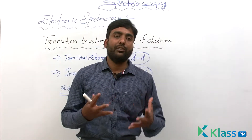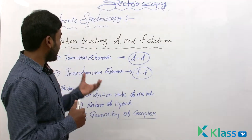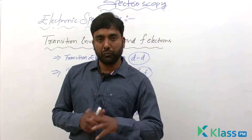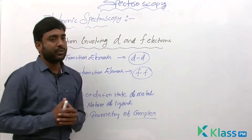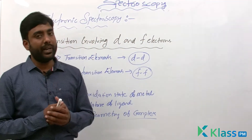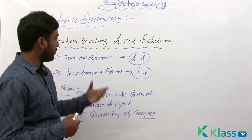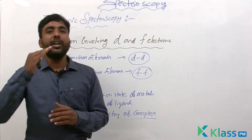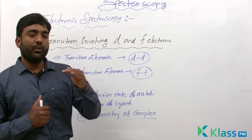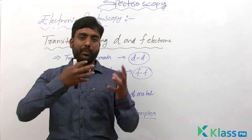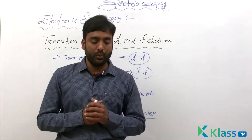The last type of transition is that involving d and f electrons. The transition elements, which are d-block elements, exhibit d-to-d transitions. Electrons in the ground state of d orbitals, after absorbing energy, move to the excited state of d orbitals — this is the d-to-d transition seen in transition elements.